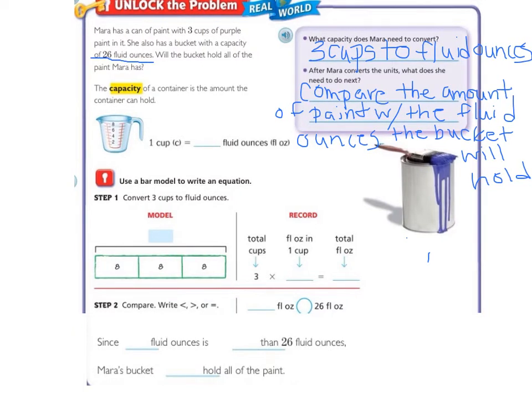Let's go ahead and solve the problem. As we will see on the next slide, 1 cup equals 8 fluid ounces. Similar to yesterday, we're going to use a bar model to write an equation. Step 1, convert 3 cups to fluid ounces. This represents 1 cup, 2 cups, and 3 cups, all of which have 8 fluid ounces in them. So if we do 8 times 3, we get 24.